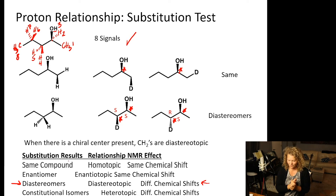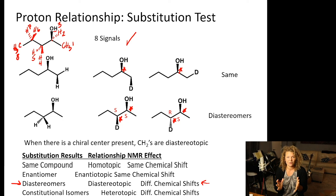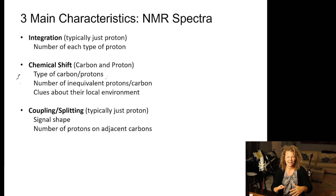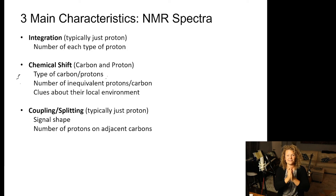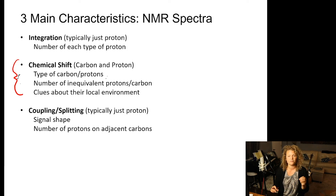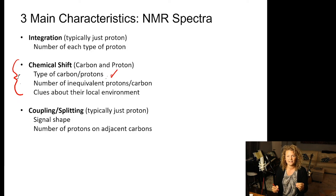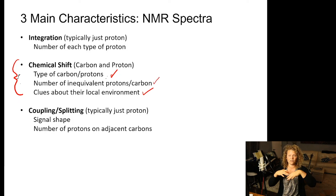We've now learned integration and how to determine how many types of protons a molecule has — how many signals to expect. The next piece of information we'll learn is where those signals take place on the spectrum: chemical shift. This is important for both carbon and proton NMR, helping you identify whether a carbon or proton is on an aromatic ring, an alkyl group, and what functional groups are nearby.